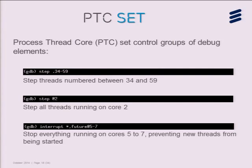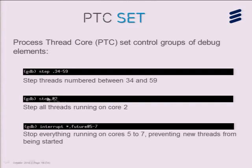That's the graphical part. When we show it to people, they are very pleased. But the second question they ask is: what about the command line? This is what PTCSET is all about — doing multi-core debug operations at the command line. For example, to step all threads between 34 and 59, you can do it with one command instead of one command per thread. To step all threads on core 2, or to stop everything running on core 5 to 7 — even preventing new threads from being started — you can do it with one command.